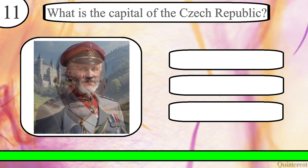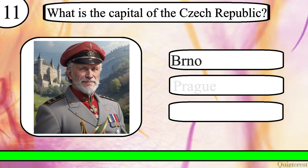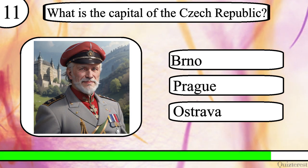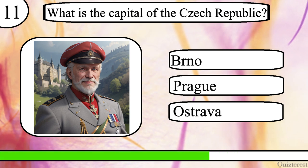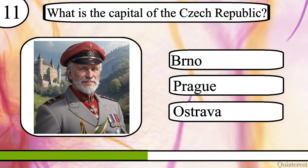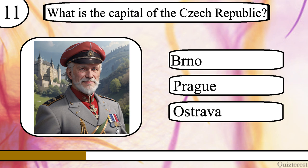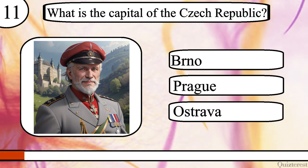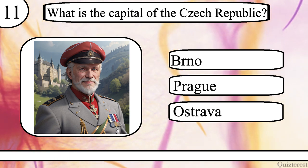Question 11. What is the capital of the Czech Republic? Brno, Prague, or Ostrava? The correct answer is Prague.